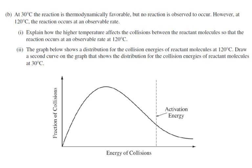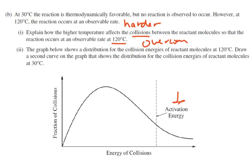The question asks how the higher temperature affects the collisions between reactant molecules so that the reaction occurs at an observable rate at 120 degrees. If you heat it up, you get more collisions, but much more importantly, you get harder collisions — collisions with higher kinetic energy. That higher kinetic energy is needed so that the molecules can overcome the activation energy, and that's where you earn the point.